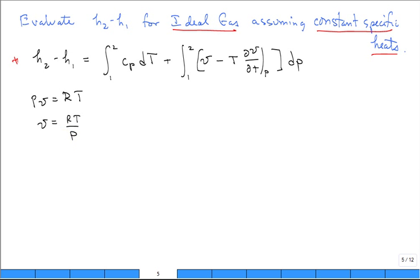And now I want to calculate the derivative of V with respect to temperature holding pressure constant. So what do we get? R over P. So right here, substitute R over P.